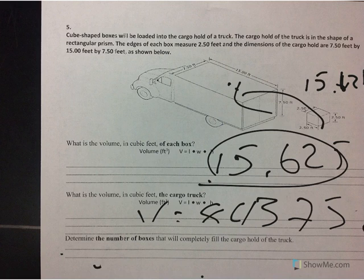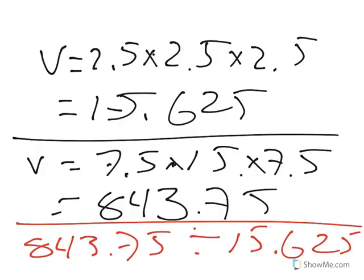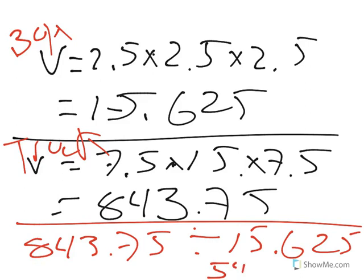Just in case you couldn't see my work, I know it's sloppy here, I don't have my pen, but I'm finding the volume of the box first, and then the truck, and then I'm dividing it to get my answer of 54. First I find the volume of the smaller pieces to see how many would go into the larger truck, and that's going to give me 54.